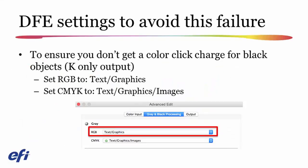To solve these issues on the DFE, we provide controls under what we call gray and black processing in the advanced color management settings, with a simpler form also available on the basic color management tab. If I turn on gray and black processing for RGB and CMYK inputs, I can force these inputs to print as black only, meaning you pay for a black and white click rather than a color click on that page.